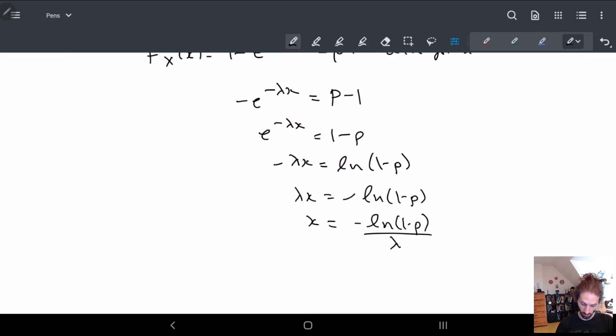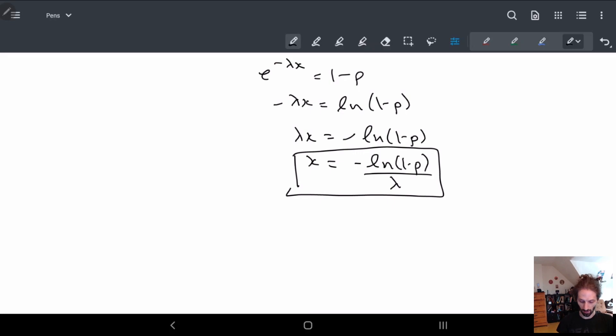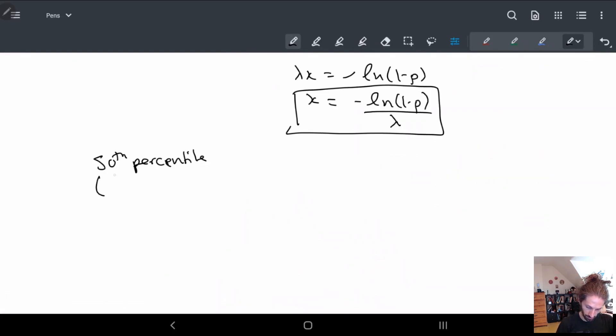And that's it - this is our pth quantile. So in other words, if I were to say, what is the 50th percentile? Other ways to say it are median, second quartile, or fifth decile. Notice how this is the first time we see the word median, and now you understand where median comes from.